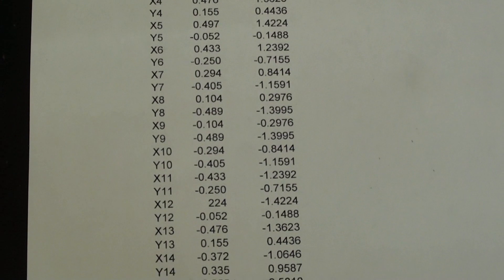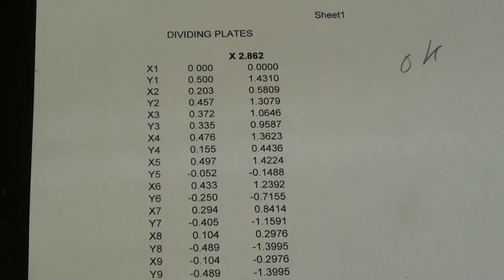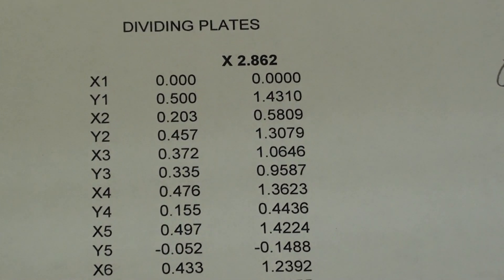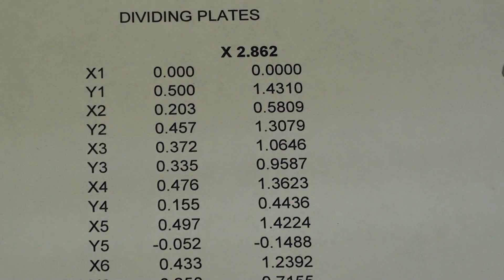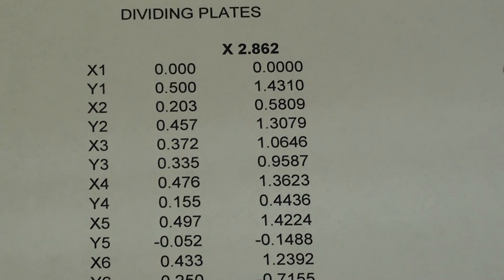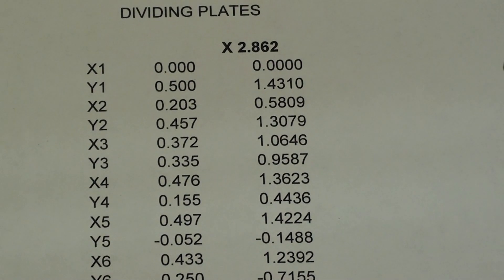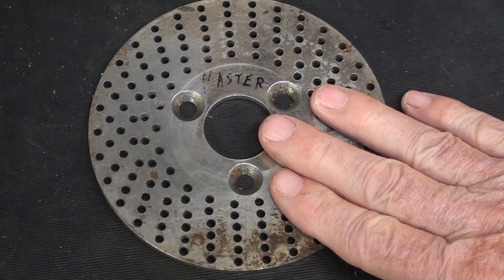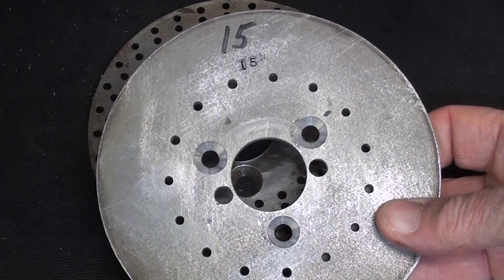My wife typed up for me everything that was in that column you saw. By the way, there was an error there, a sign error, and I really struggled with that because they misprinted something many years ago. I always wondered how accurate those charts were, but there we are. There's coordinates for the first hole, X1 and Y1, but they must be multiplied by the diameter of the hole circle, and this hole circle is 2.862. This is the only plate that came with the master brand lathe dividing head.